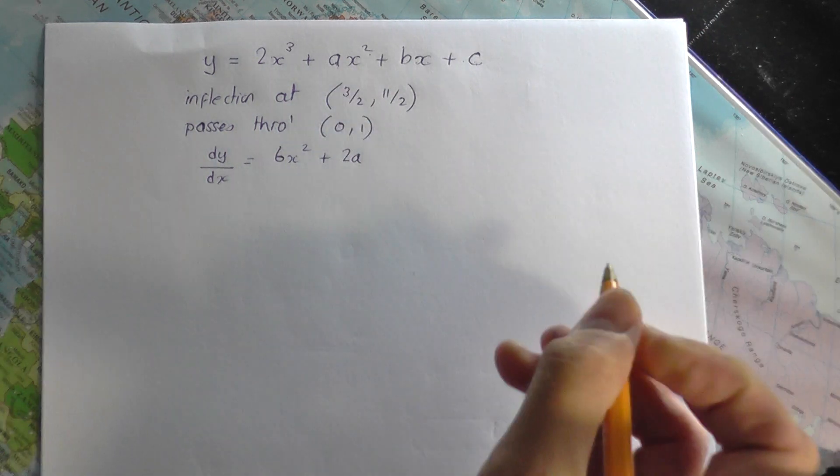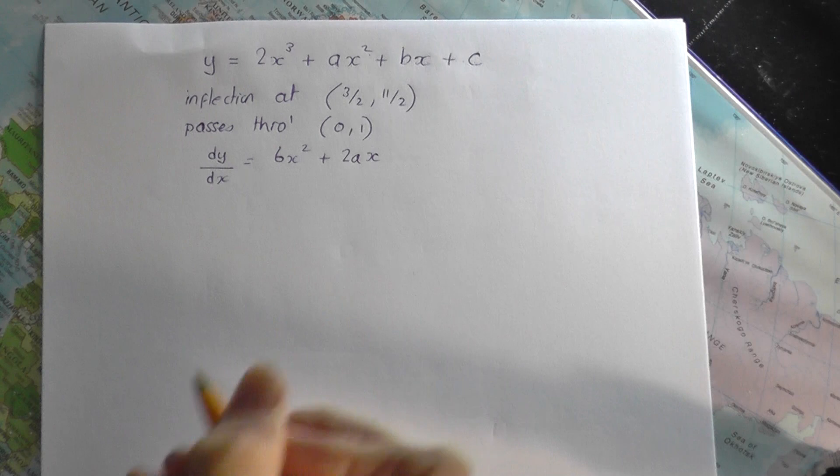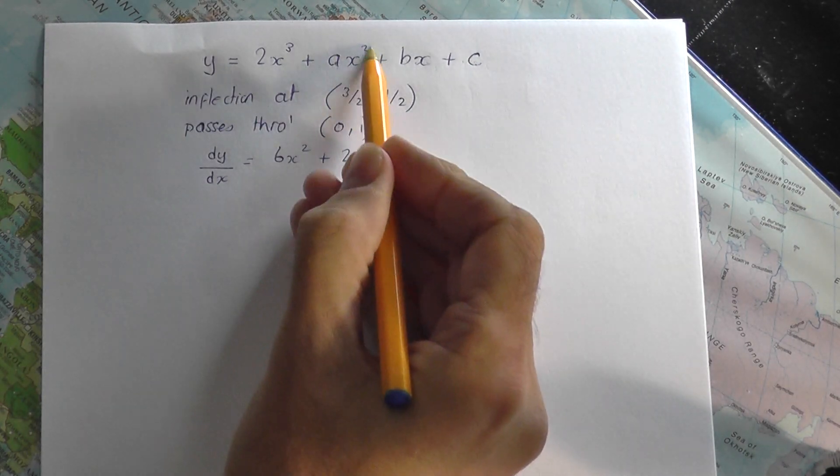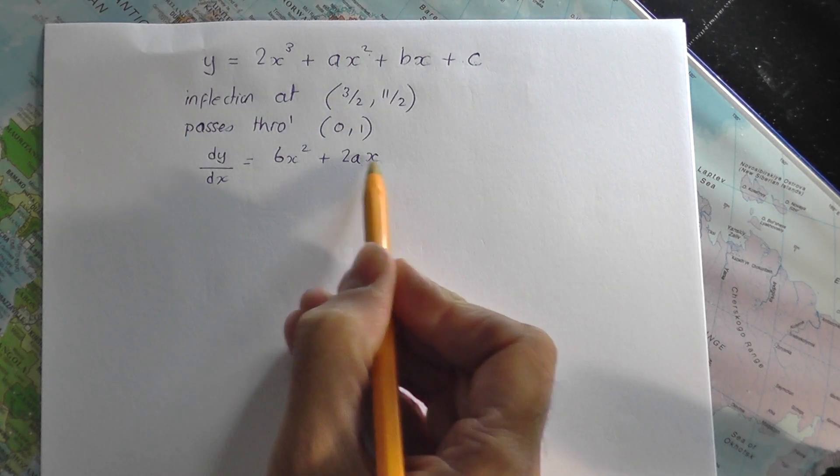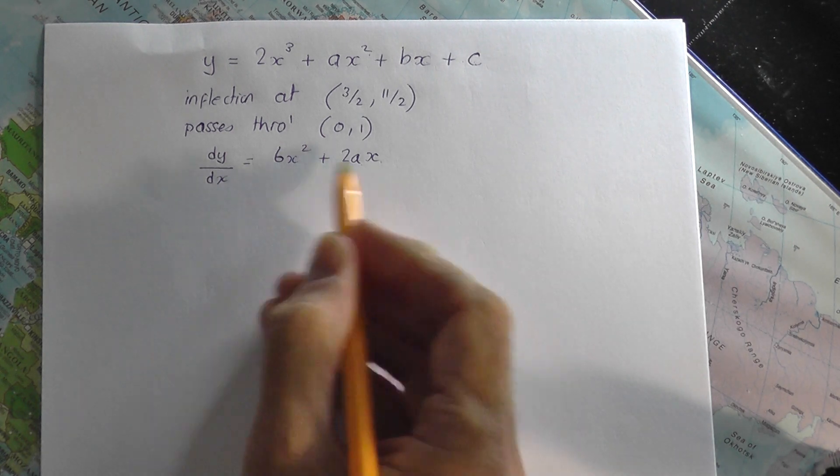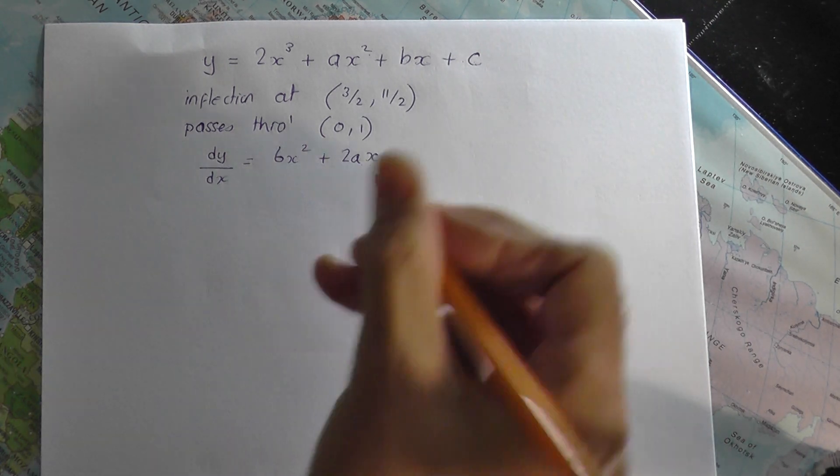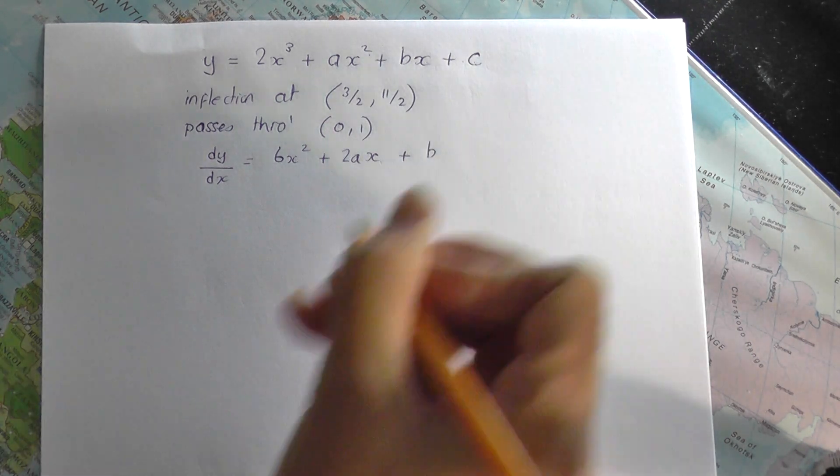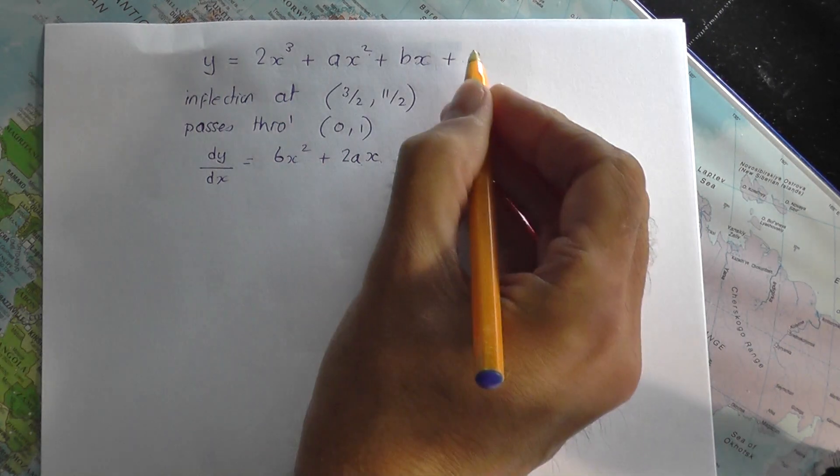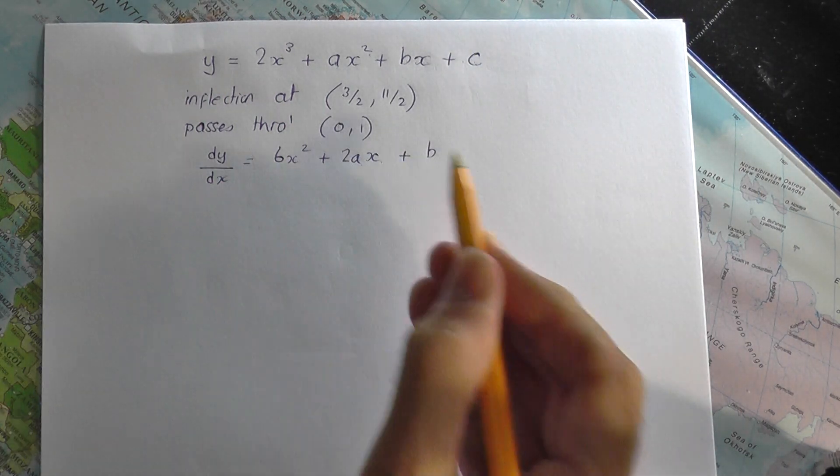2 to the front means you're going to get 2 times the a. a is just a number, so 2a x to the power 1. So the ax squared becomes 2ax. a, remember, is a number, so it just multiplies the 2. Plus bx, differentiate, you get b. Differentiate c, you get nothing. So there's dy by dx.